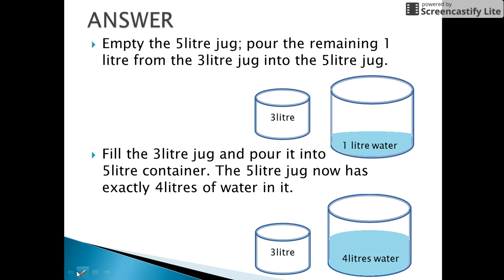In the next step, we empty the 5-litre jug and pour the remaining 1 litre from the 3-litre jug into the 5-litre jug. Now our 5-litre jug has exactly 1 litre of water in it.